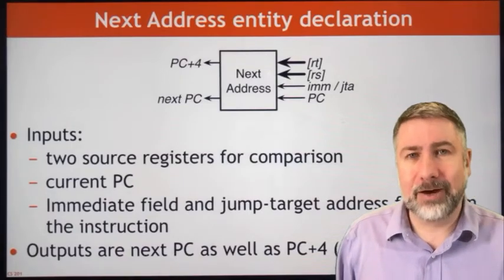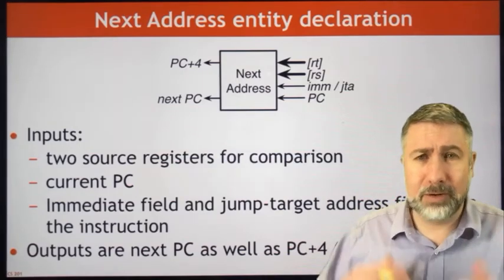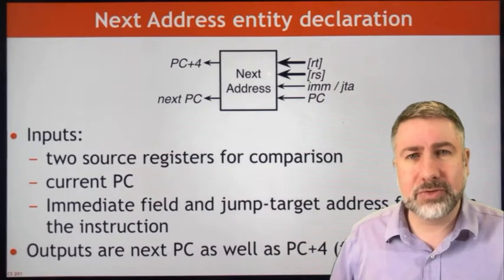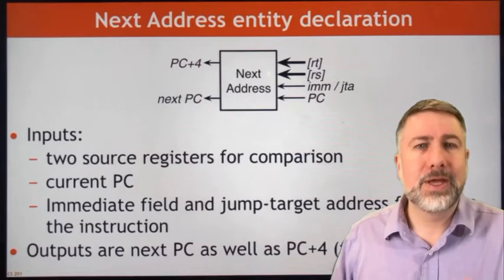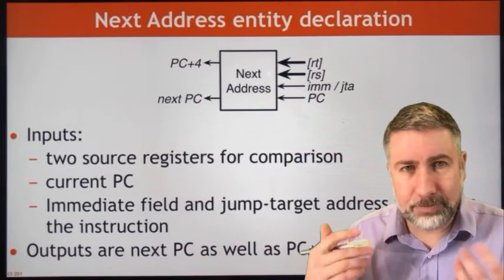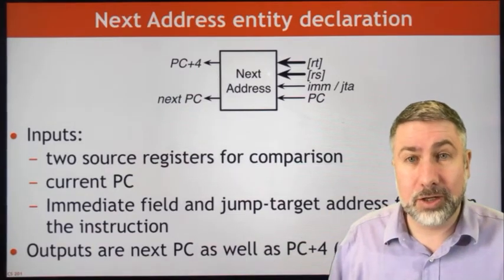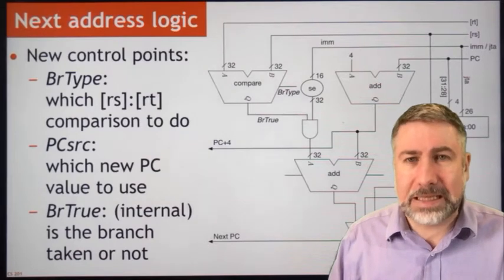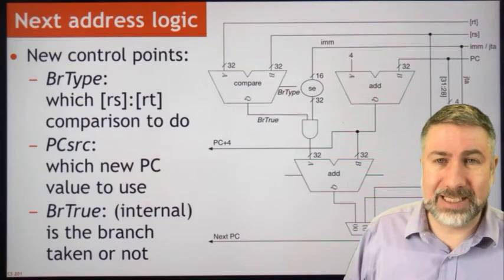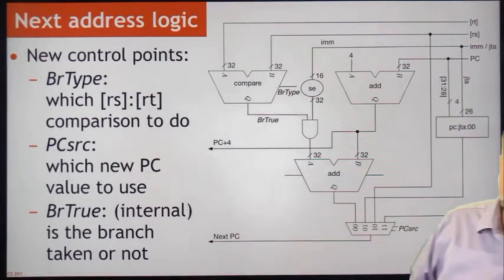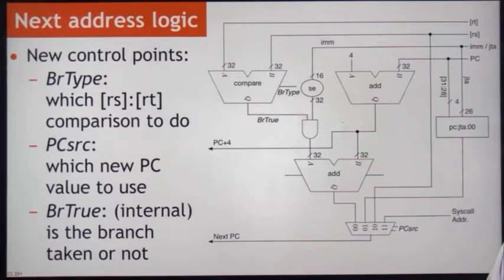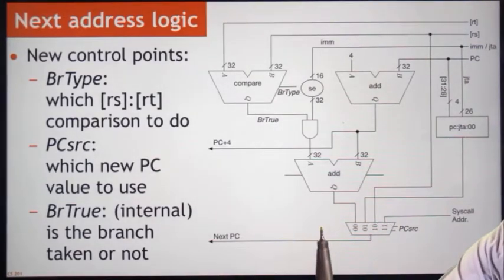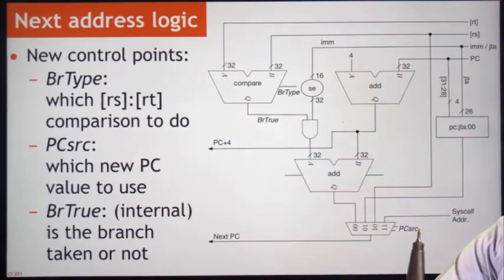This is the magic box we have right now, and we want to build out the hardware. I'm going to give you the hardware and walk through how each individual unit works for each kind of instruction. There are two register sources, the current value of the program counter, and the immediate or jump target address field. We produce a next value of the program counter, and also PC plus 4 to store when we're doing a jump and link. The four options for the next program counter are chosen using the multiplexer here, addressed by the control point we'll call PC source. There are four options.